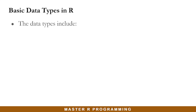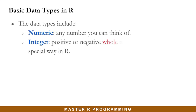The data types in R include the numeric data type, which can be any number that you can think of. We have the integer data type, which can be positive or negative whole numbers written in a special way in R, which we are going to discover very soon. Strictly whole numbers.